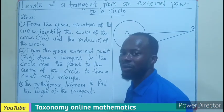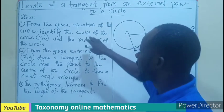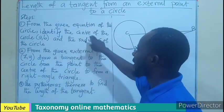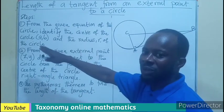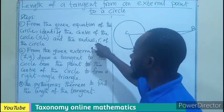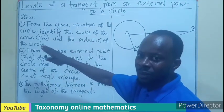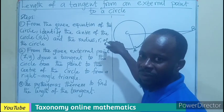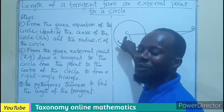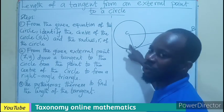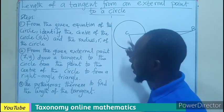Let's see some of the steps we are going to follow. Step one: from the given equation of the circle, identify the center of the circle, which is always denoted by A,B, and the radius R of the circle. So first, we will be given the equation of the circle, find the center of that equation, then find the radius of that equation.